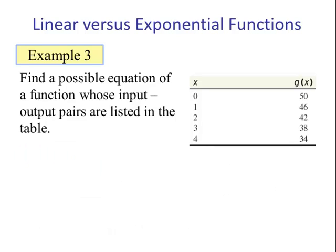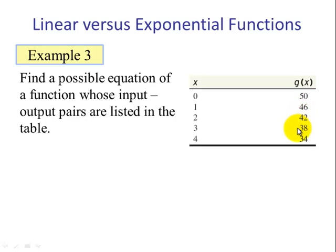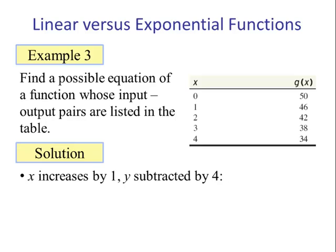Example 3. Find a possible equation of the function whose input-output pairs are listed in the table. As x increases by 1, g(x) is decreasing: from 50 to 46, 46 to 42 — decreasing by the same amount. 50 minus 46 is 4, 46 minus 42 is 4, and 42 minus 38 is 4. So this is not an exponential function. As x increases by 1, y is being subtracted by 4 — this is a linear function.